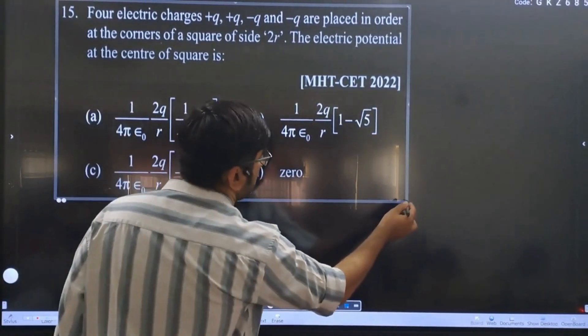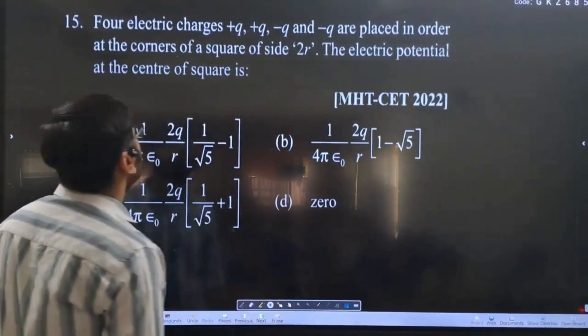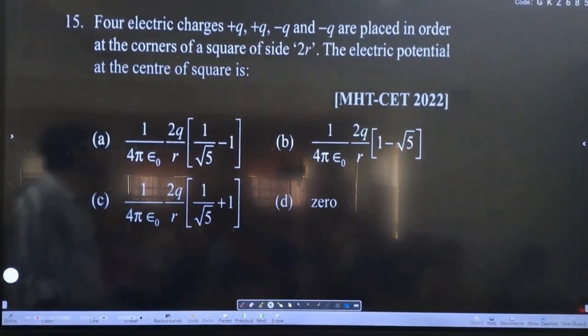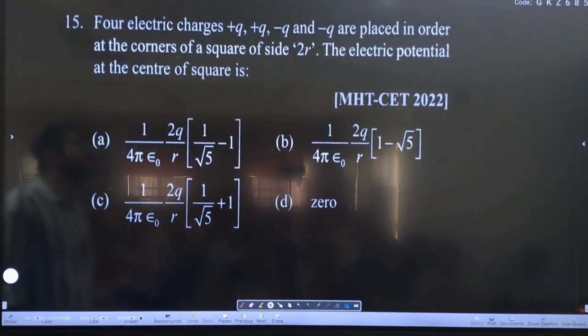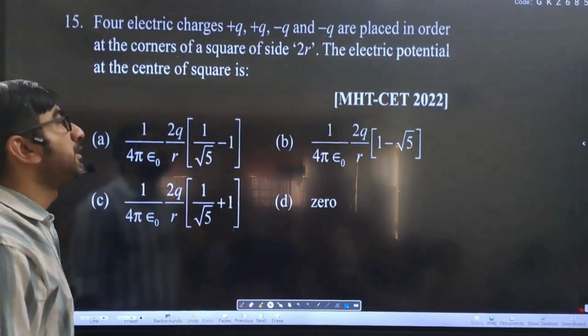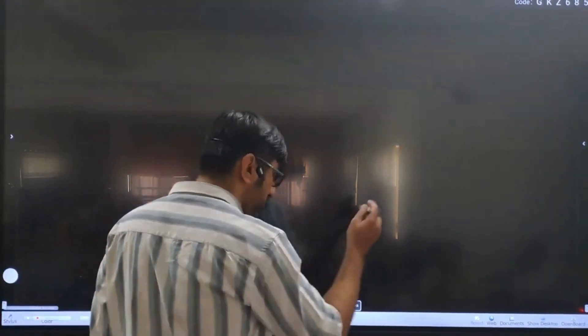Good question. The question is: four electric charges +q, +q, -q, -q are placed in order at the corners of a square of side 2r. The electric potential at the center of the square is - simple question.